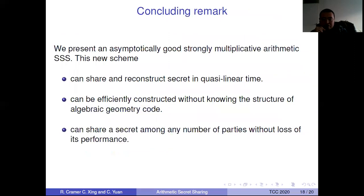Let's give some concluding remarks. In this work, we present an asymptotically good strongly multiplicative arithmetic secret sharing scheme. With this new scheme, you can share and reconstruct the secret in quasi-linear time, and it can be efficiently constructed without knowing the structure of algebraic geometry codes — we only search for the code, and because the search space is very small, we can do it very efficiently. Also, the scheme can share a secret among any number of parties without loss of performance, meaning the gap is very small.